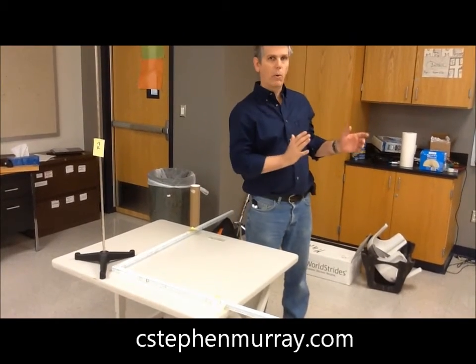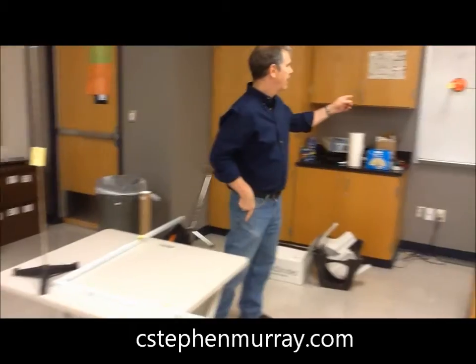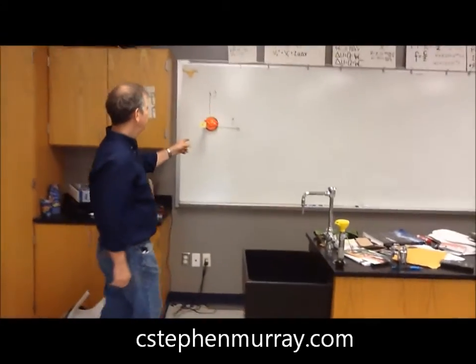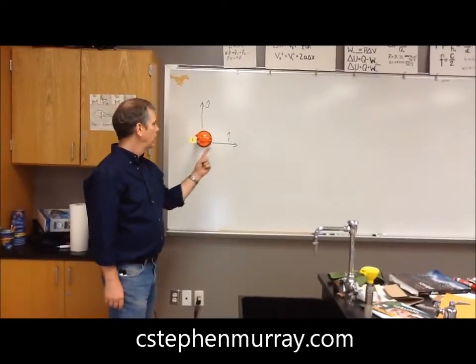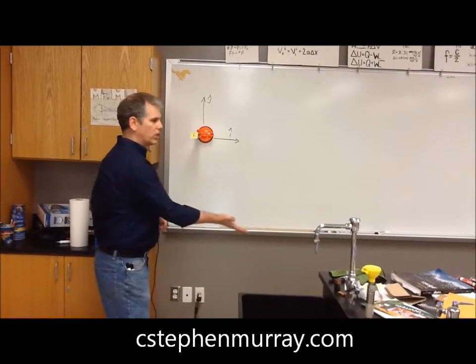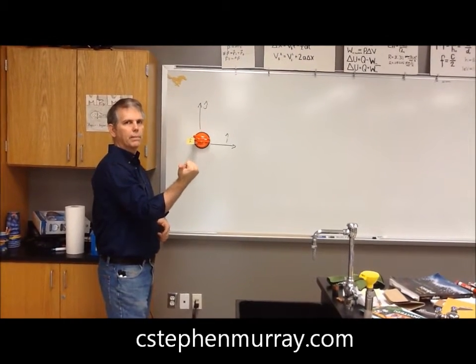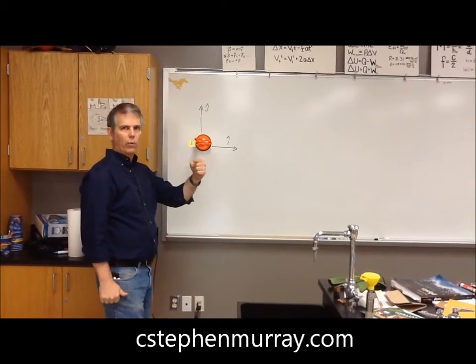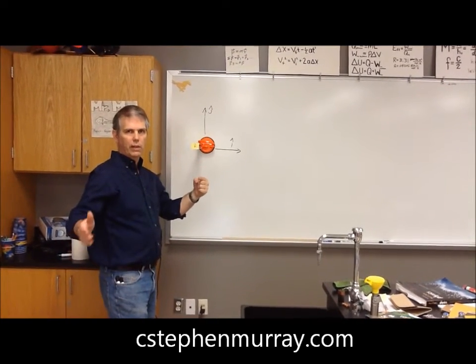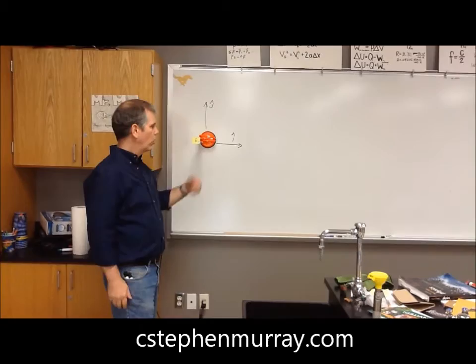Now, what if you're looking towards the board? On the board, we have it worked out here. Notice, I have i-hat this way, j-hat this way. Sweep from i to j, and your thumb points towards k, which is coming straight out of the board. Which one do you use? It depends on if you're looking down on your desk or at the board.